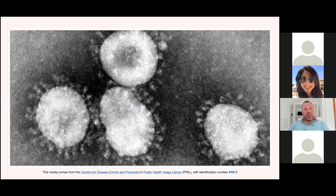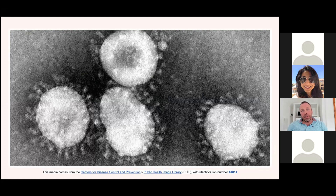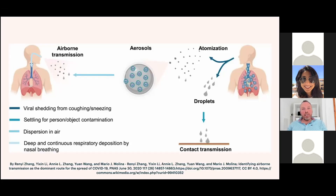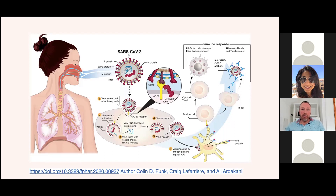Coronaviruses are a group of related RNA viruses that cause diseases — in humans and birds, respiratory tract infections ranging from mild to lethal; in cows and pigs, diarrhea; in mice, hepatitis and encephalomyelitis. The standard diagnostic method is detection of the virus's nucleic acid by real-time reverse transcription polymerase chain reaction — the PCR test. On entry into the host cell, the virus particle is uncoated and its genome enters the cell's cytoplasm where replication can occur. When more than two viral genomes are in the same infected cell, genetic recombination can occur.